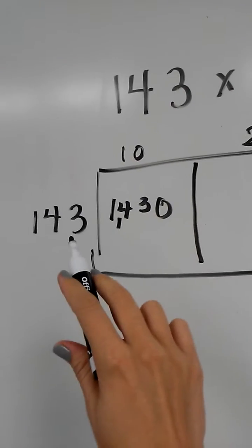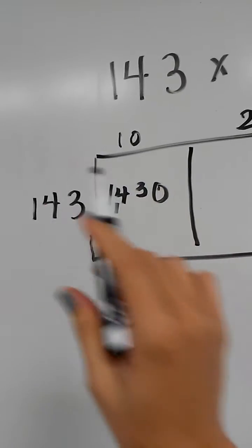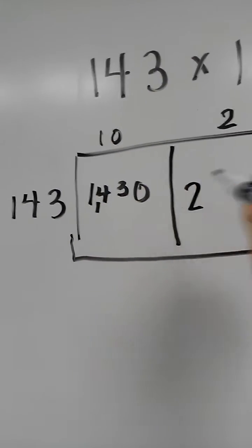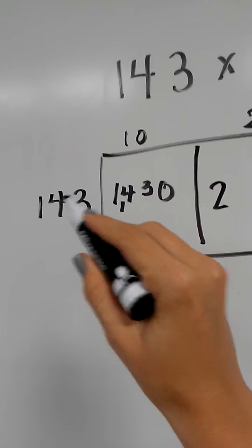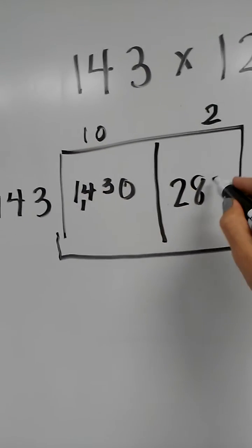This box represents 143 times 2, which I can do in my head. I'm thinking 2 times 100 is 200, 2 times 40 is 80, and 2 times 3 is 6, so 286.